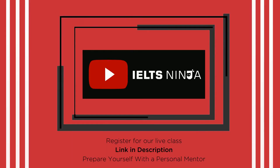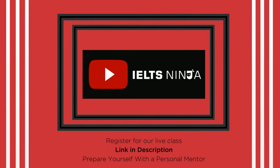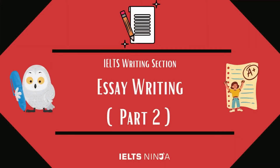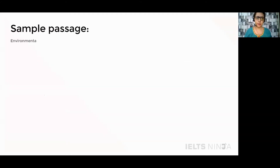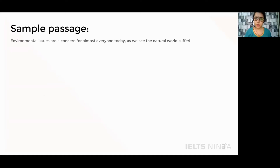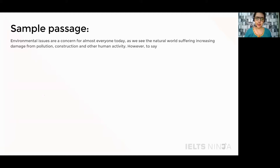Welcome to IELTS Ninja. Now that my essay flow is at hand, let us look at the sample passage. As I told you, the first introductory paragraph in a sample passage should consist of three things: one, an opening statement, then an overview statement, and a thesis statement.